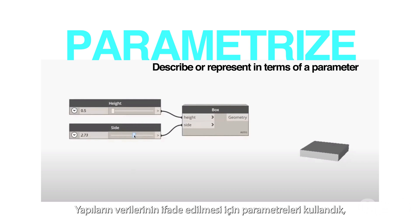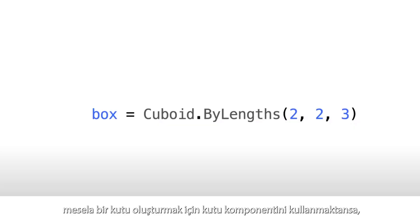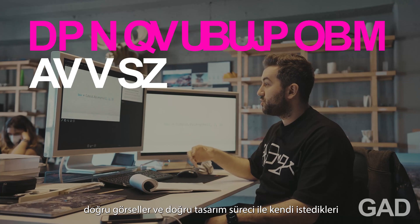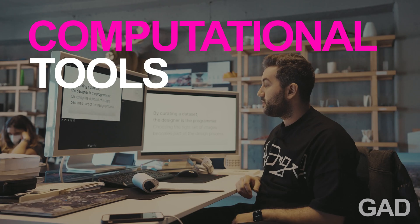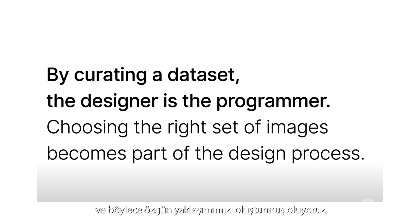We try to parameterize the components of the building. You can see we can create a box with two sliders and a box component, and we can also use code — this code is just describing a box with coordinates two, two, and three in XYZ. Architects are increasingly using computational tools to generate geometry, and by creating our own dataset we can become the designer of the program.